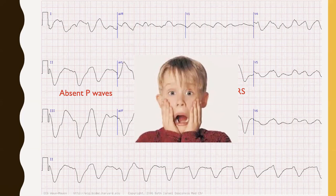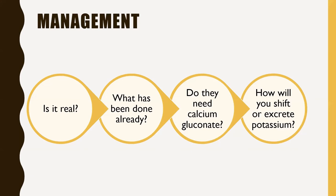For management of severe hyperkalemia: first, confirm the level is real — a potassium of 9 may reflect hemolysis. Check what the ED has already done. If EKG changes are present, give calcium gluconate 2 grams IV to stabilize the cardiac membrane — this doesn't change the potassium level but prevents arrhythmia. A great question was raised about contraindications in hypercalcemia; the hunch is to still give it to prevent a dangerous arrhythmia, but consult your team.